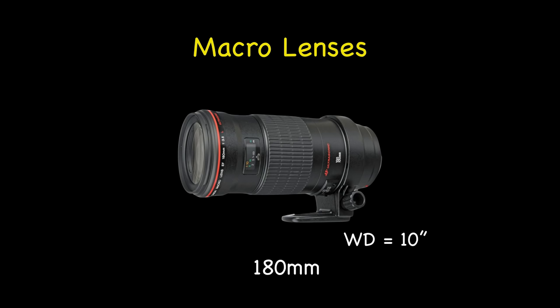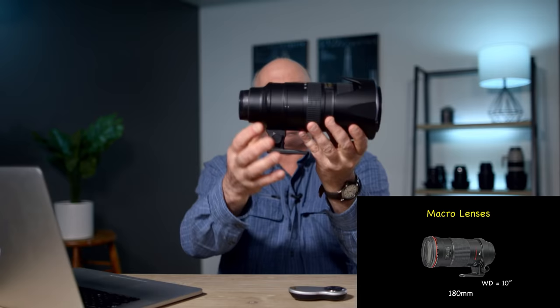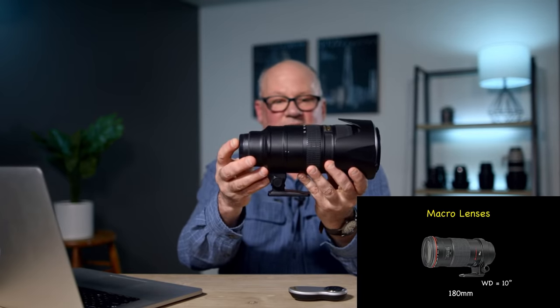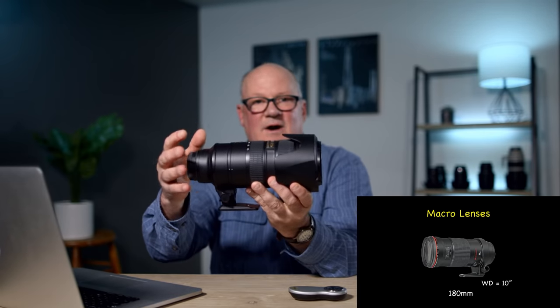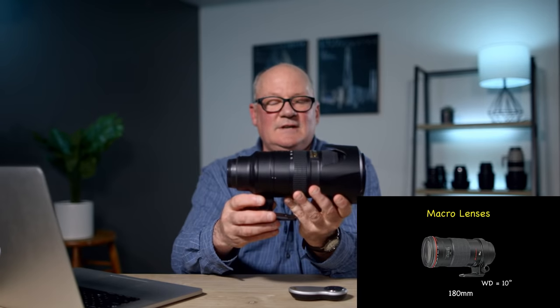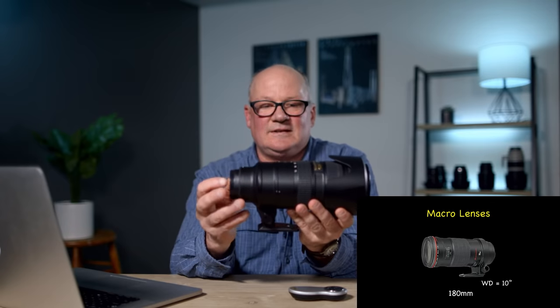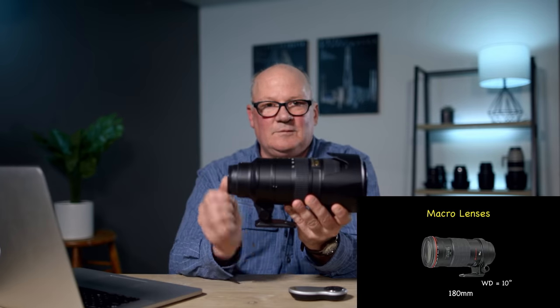You'll notice this 180mm macro includes a foot — a lens collar — which helps you put the whole rig more over the tripod, so it's a little more stable. When we're shooting macro, we need to get everything as stable as possible in most situations to get nice sharp pictures, and this foot will allow you to do that.